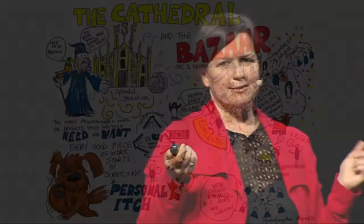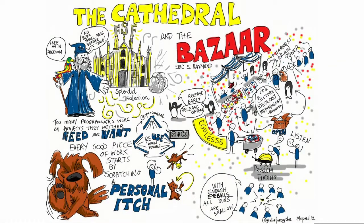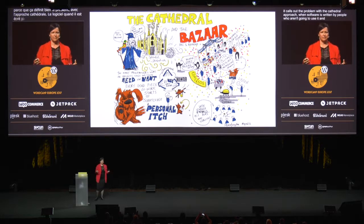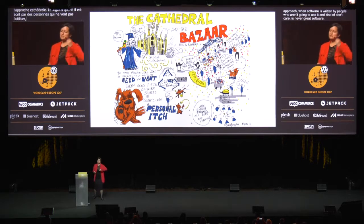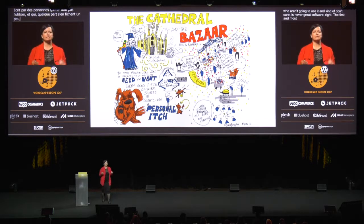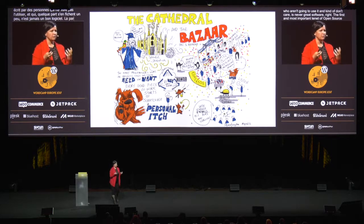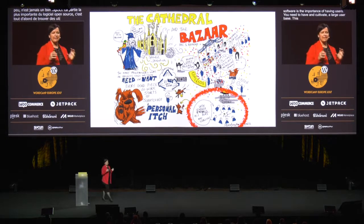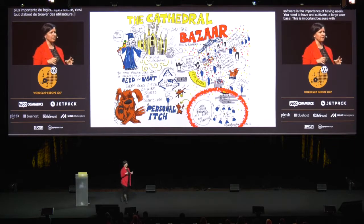Why does it work? I love these visual notes by Julia Forsyth — they're magnificent. For one thing, it really calls out the problem with the cathedral approach. The problem with the cathedral approach is that software, when it is written by people who aren't going to use it and kind of don't care, is never great software. The first and most important tenet of open source software is the importance of having users. You need to have and cultivate a large user base, because with many eyes, all bugs are shallow. Raymond calls this Linus's Law, after Linus Torvalds of Linux.